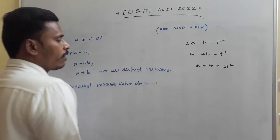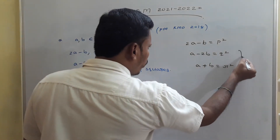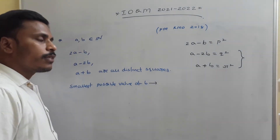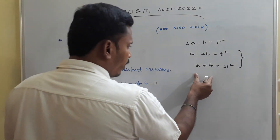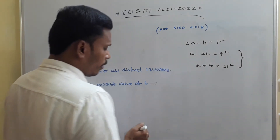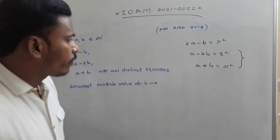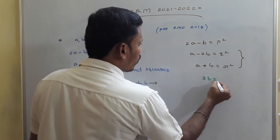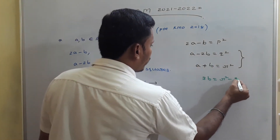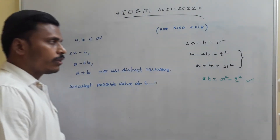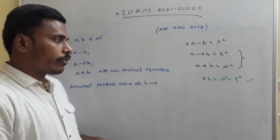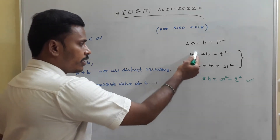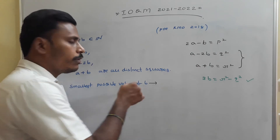First, we analyze the second and third equations. Taking the third relation minus the second relation, we get b minus negative 2b, which is 3b, equal to r squared minus q squared. Here a eliminates, since our concentration is on b.